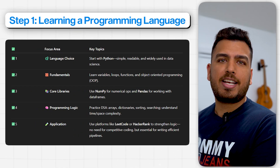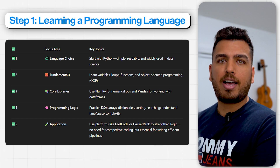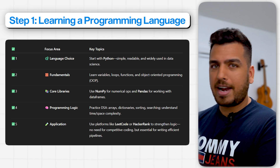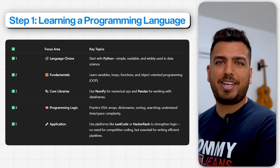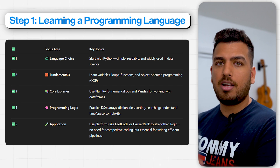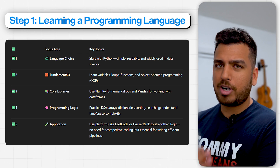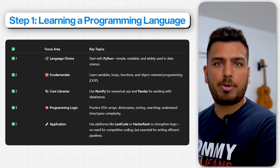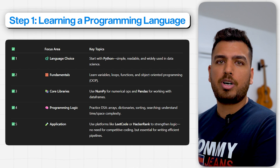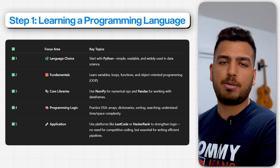The very first step towards data science is learning a programming language. I recommend Python because it's simple, clear, easy to learn, and it has amazing support in the world of data. When you're learning Python, start with the basics — learn what are variables, how do you write loops, what are functions, and what are object-oriented programming concepts. Once you have mastered all these basics, you can move towards data analysis specific libraries in Python.